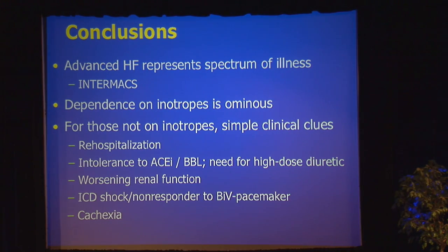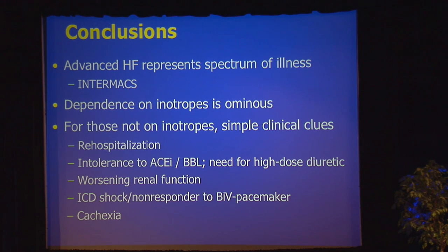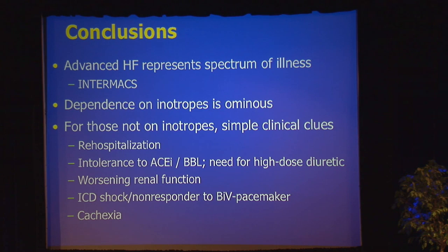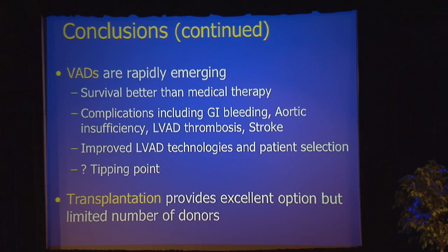Advanced heart failure represents a spectrum of illness. The INTERMACS categorization profiles are worth knowing, particularly one through three. If the patient is inotrope dependent, that is ominous. But for those not on inotropes, there are simple clues — rehospitalization has emerged as probably the number one clue, but intolerance to medications, escalating diuretic doses, kidneys giving out, patients getting shocked, or starting to lose weight from cardiac cachexia are all warning signs to think about referring your patients on.